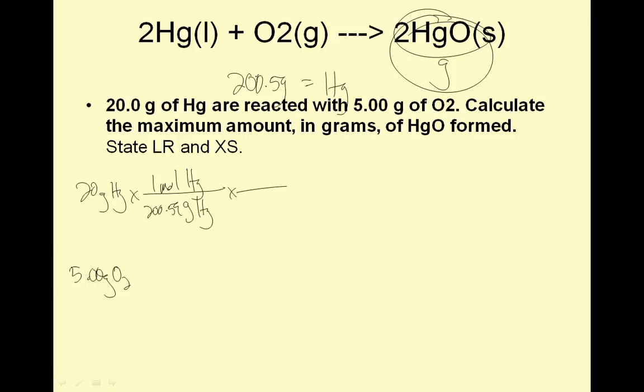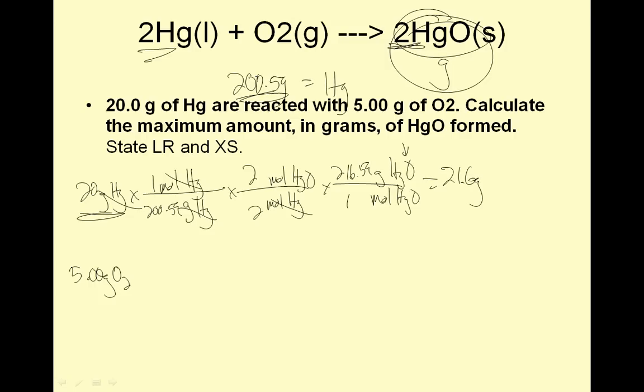So, 20 grams of mercury divided by 200.59 grams per mole of mercury. Then, I'm going to convert those moles of mercury into moles of mercury oxide. I have moles over moles, I'm going to use coefficients, 2 over 2. Then go into grams of HgO. The molar mass is 216.59, because O is 16. So, 20 divided by 200.59 times 2 divided by 2 times 216.59 is 21.6 grams. That means 20 grams of mercury can make 21.6 grams of HgO.